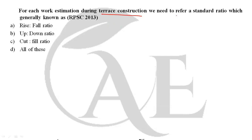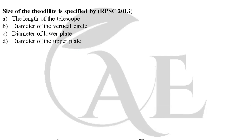Next question: for earthwork estimation during terrace construction, we need to refer to a standard ratio generally known as the cut-fill ratio. Option C is the correct answer. Next question: the size of a theodolite is specified by the diameter of the lower plate. So option C is the correct answer.